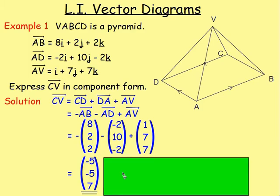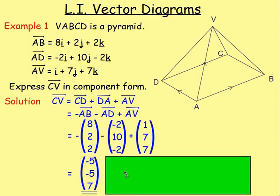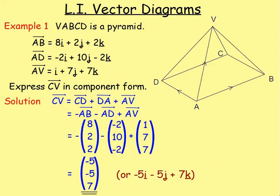If you work that out in component form — just be very careful with the negatives — you would have negative 5, negative 5, 7. Or if we write it in the form of i, j, k, we'd have negative 5i take away 5j plus 7k. And that is how you would do that example.